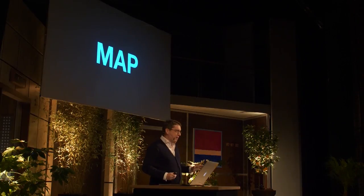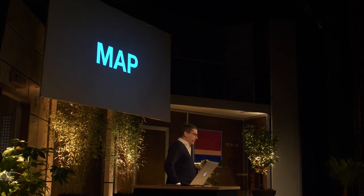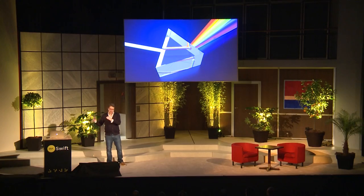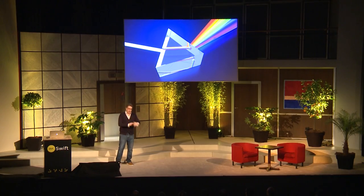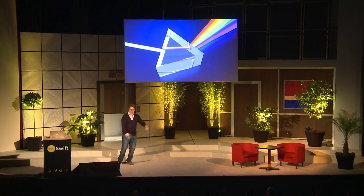Now enough intro, let's get to the code. Start with map. Map works great on collections and optionals — easy collections to start. What it does is it transforms stuff. Values come in, get transformed by a closure you write, and emitted as transformed values.